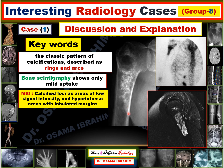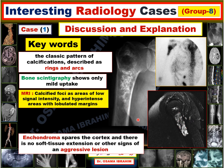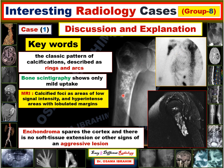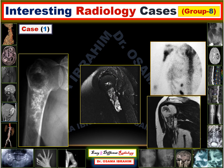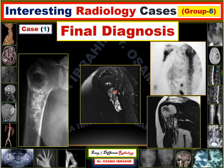When a lesion shows a narrow zone of transition, is purely intramedullary with no cortical destruction, and demonstrates only mild tracer uptake, these are all criteria of a non-aggressive lesion. At this location, with these criteria — including no soft tissue extension confirmed on MRI — the diagnosis is enchondroma. The final diagnosis of this case, with arc calcifications in the proximal humerus and the STIR and T2 MRI appearances, is enchondroma.